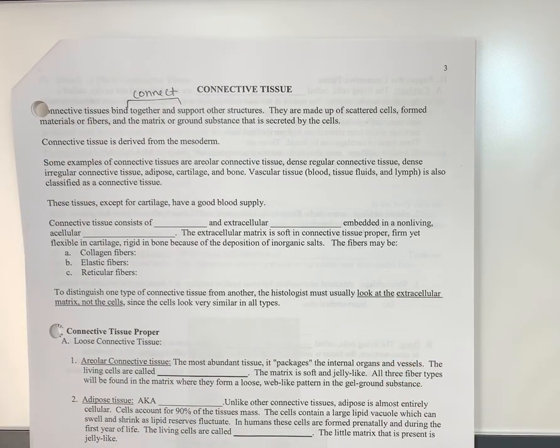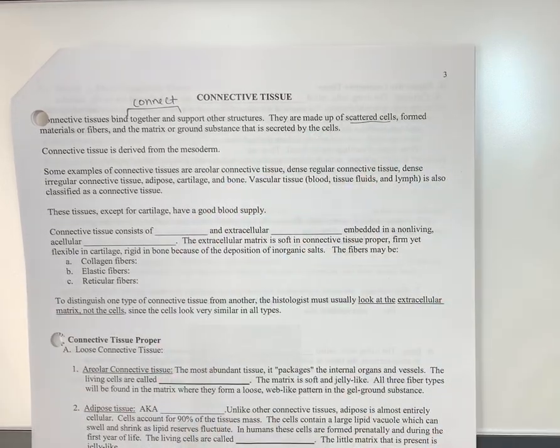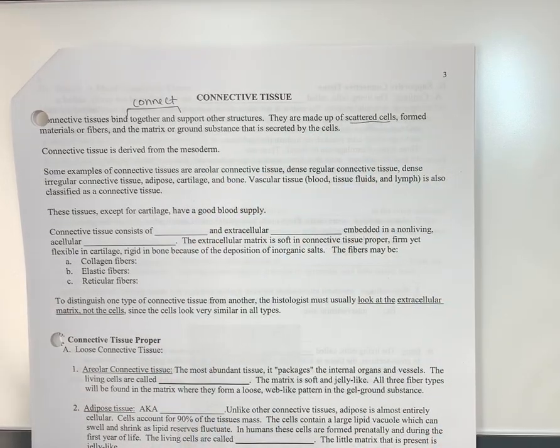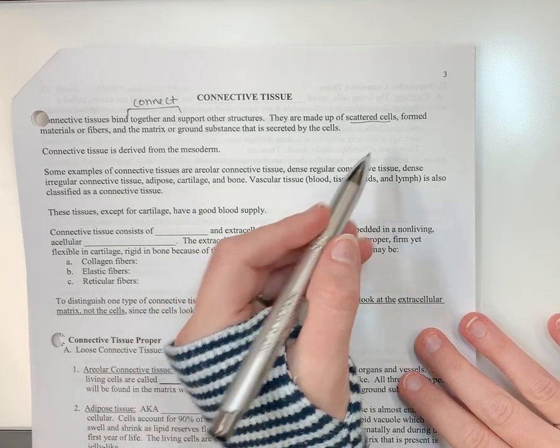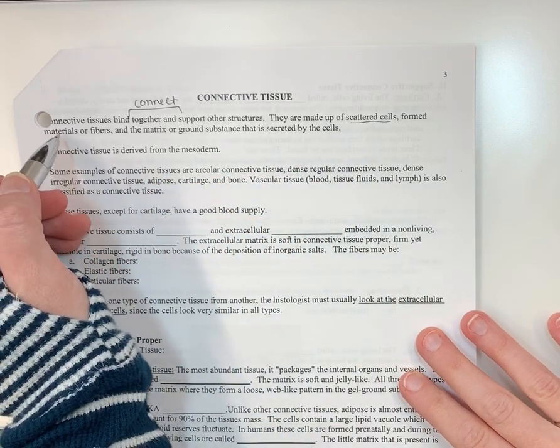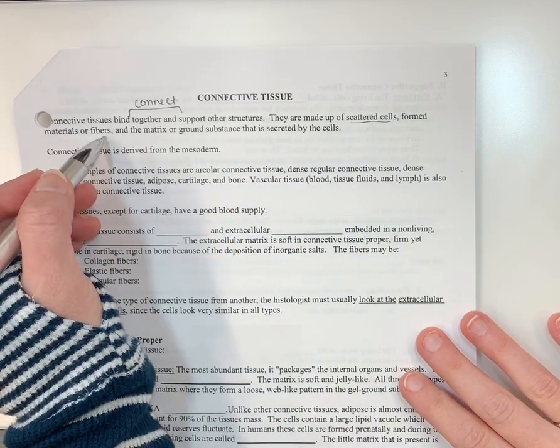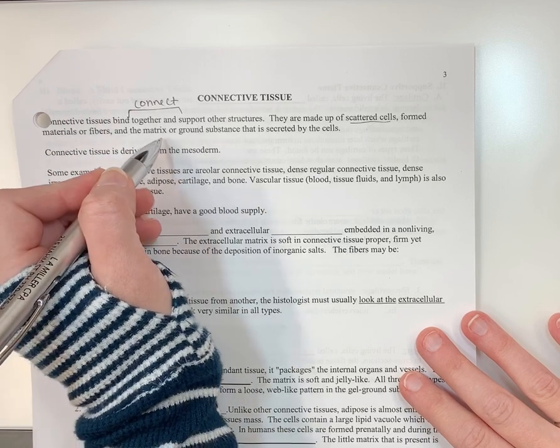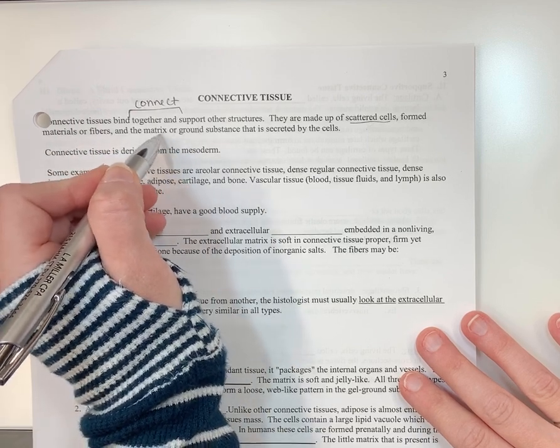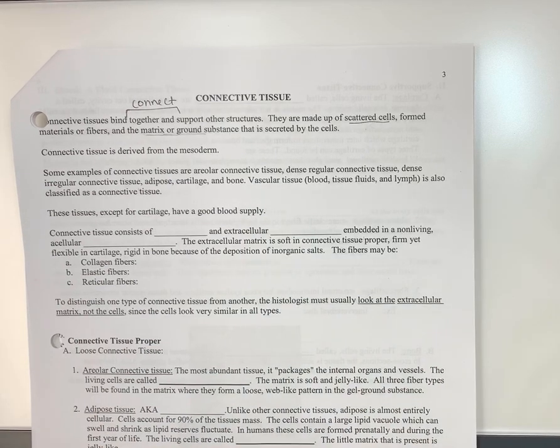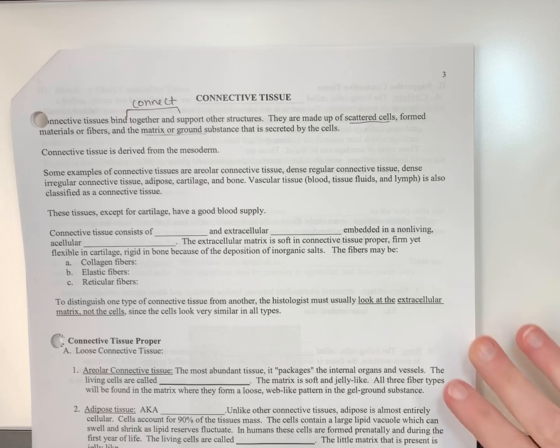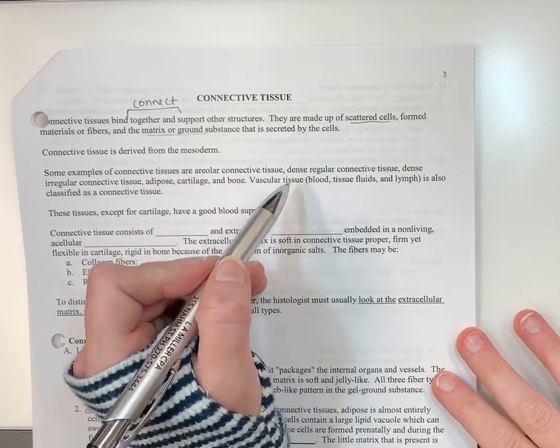Now, generally, connective tissue does not have that many cells. They're going to be scattered. So when we were talking about epithelium, the cells were all just smashed up against each other. Here they're not. The cells are going to tend to be further apart. And in between them, you're going to have some sort of material or fibers that come from these cells. And then they're going to be suspended in some sort of matrix or ground substance, and I'll talk about what that's going to be depending on the type of tissue. And the matrix is secreted by the cells.